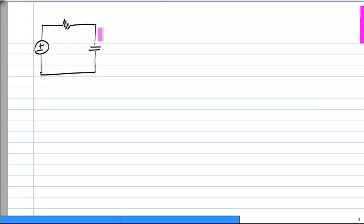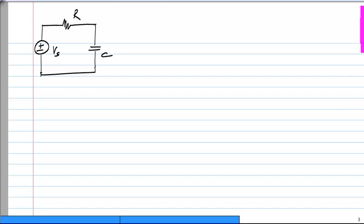Any circuit with a single capacitor and any number of independent sources and other linear components can be reduced to this form — Vs, R, and C. This may be the actual circuit, or Vs and R could be the Thevenin equivalent of whatever is connected to the capacitor. As long as you have a single capacitor, you will have a first order system at most, and this will be the equivalent circuit.